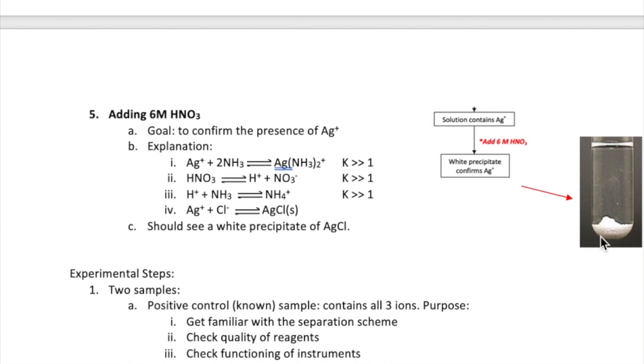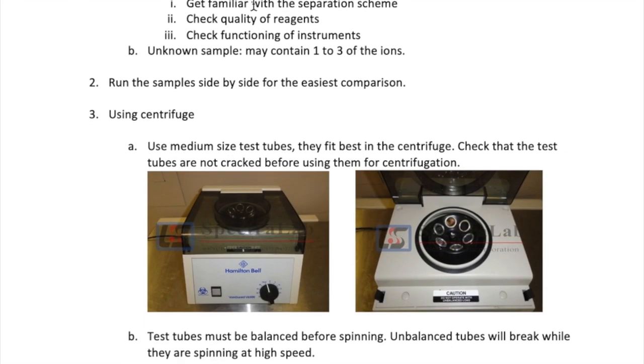So that's the conceptual background of the group 1 cation qualitative analysis. Let's now discuss some experimental steps. First, you'll get an unknown sample from your instructor. You'll also make a positive control, or a known sample, which contains all three ions. The purpose of the positive control is really to familiarize yourself with the experimental steps, to see the actual results you're supposed to get, to check the quality of your reagents, and to make sure that the equipment is functioning properly. Running a positive control experiment is typical in all research laboratories. To make it easy for you to spot differences, you want to run your sample, both the positive control and the unknown, side by side.